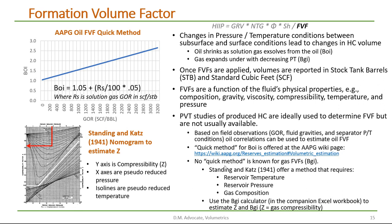There is no quick method known for gas formation volume factors, B sub G sub I. Standing and Katz (1941) offer a method that requires only knowing reservoir temperature, reservoir pressure, and gas composition — and these terms are usually readily available. Standing and Katz developed a nomogram that determines the compressibility factor of the gas, which is the primary ingredient in determining B sub G sub I. The Standing and Katz methodology for estimating B sub G sub I will be demonstrated in the companion Excel workbook.